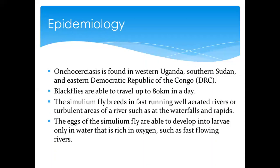Onchocerciasis is mostly found in western Uganda, South Sudan, and some parts of the DRC. The black flies — the Simulium — have an ability to travel up to eight kilometers in a day. The Simulium fly breeds in fast-running, well-aerated rivers, or turbulent areas such as waterfalls and rapids.